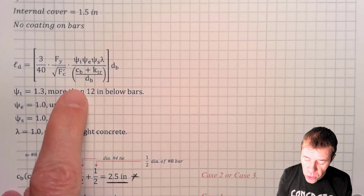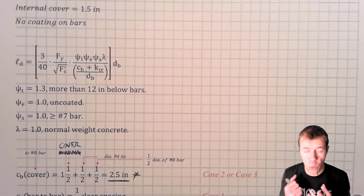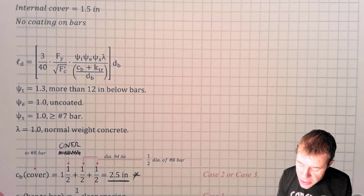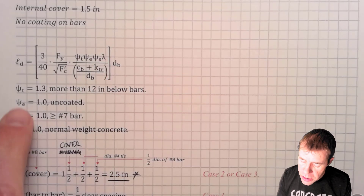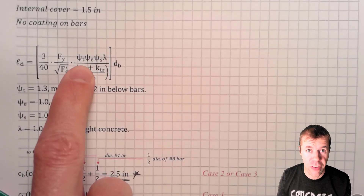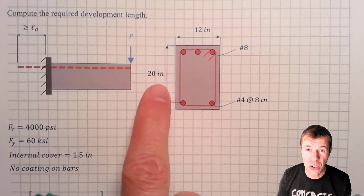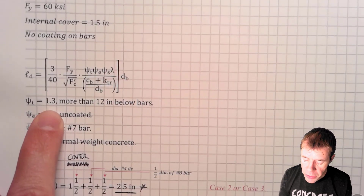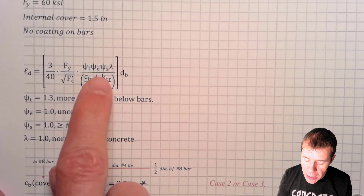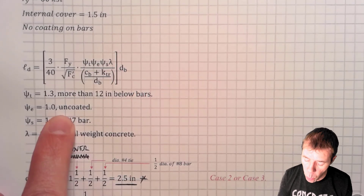Here is our equation with all the factors. The first question is: do I have a top bar effect? Do I have more than 12 inches below the bar? The answer is yes, therefore I will be using a Psi-T of 1.3. For my Psi-E — my epoxy coating factor — it is an uncoated bar, so I'm using 1.